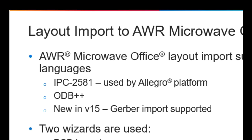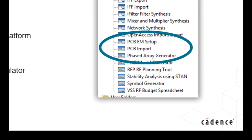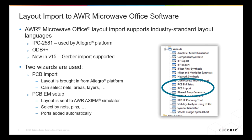Back to Allegro and IPC 2581 — to bring the layout into Microwave Office, the integration uses two wizards. The PCB Import Wizard brings in the layout from Allegro; it is aware of the various nets and layers that will be used in Axiom, and you can do an area select and more. Once it's in Microwave Office, you use the PCB EM Setup Wizard to bring the imported layout into Axiom, where ports are automatically added using pin ports.